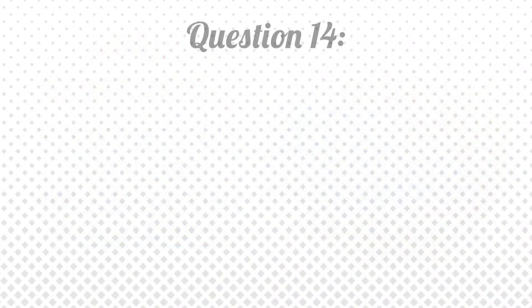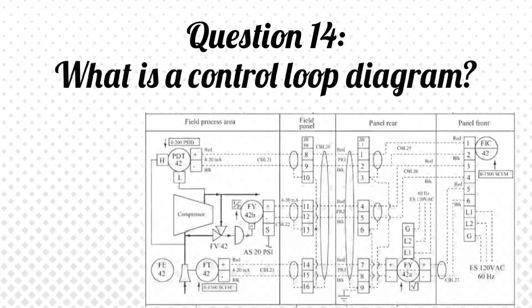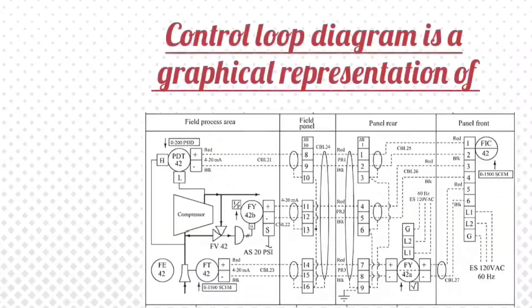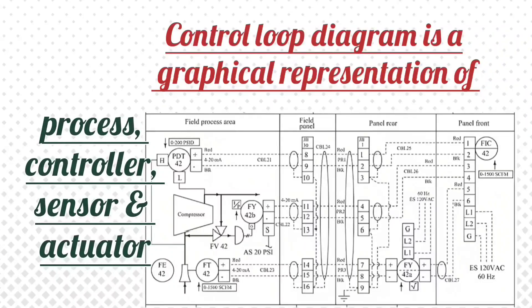Question 14: What is a control loop diagram? Answer: A control loop diagram is a graphical representation of the process, controller, sensor, and actuator.